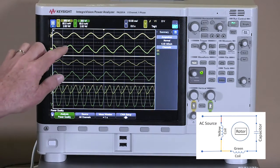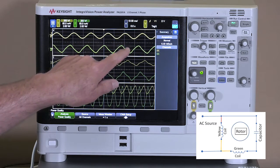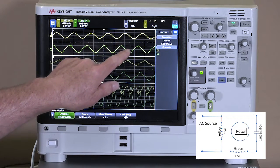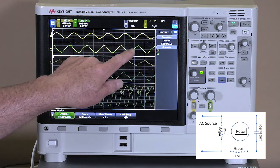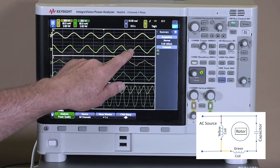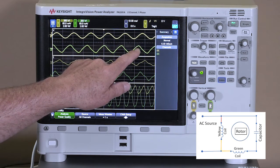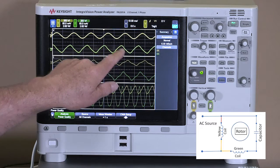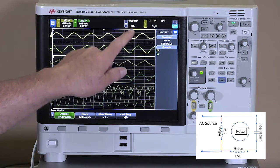The second coil is shifted by 90 degrees because of our capacitor. This capacitor is what's called a run capacitor, and its purpose is to shift the signal on the second coil by 90 degrees.